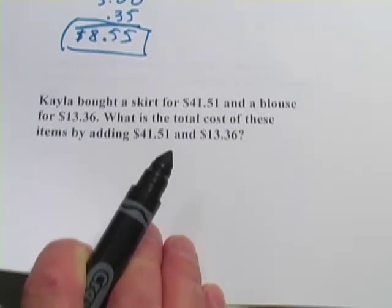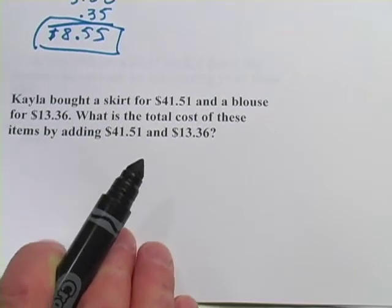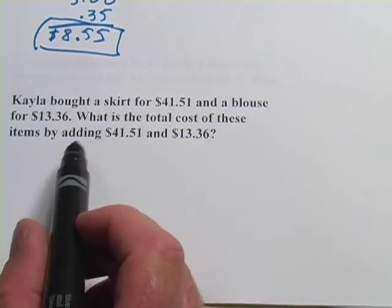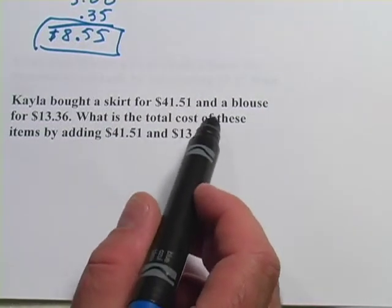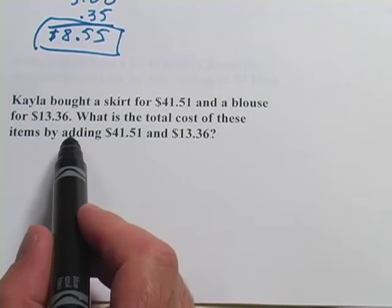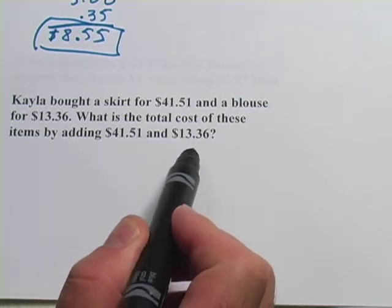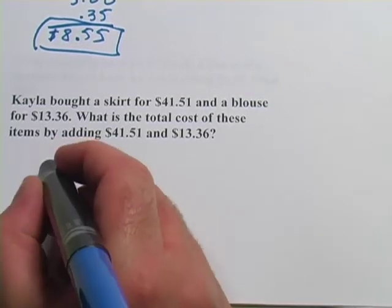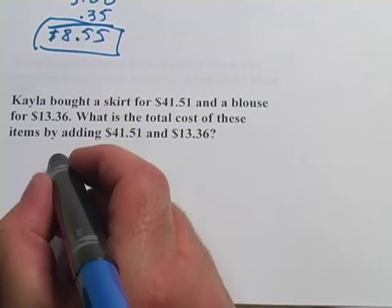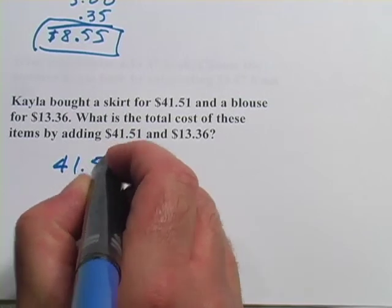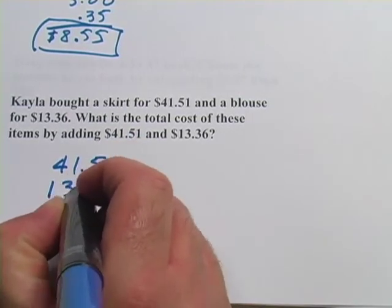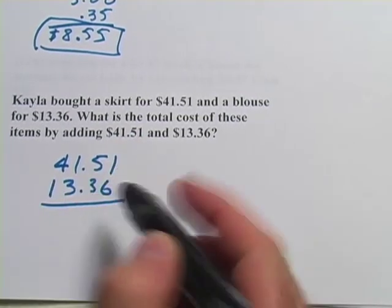And finally here we have a word problem that uses addition. This says, Kayla bought a skirt for $41.51 and a blouse for $13.36. What is the total cost of these items by adding $41.51 and $13.36? So we'll do that the same way we did this problem up here. We'll stack them up with the decimal points in the same place, and then we simply add.